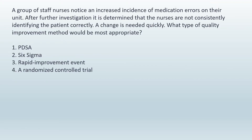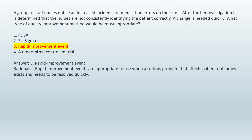A group of staff nurses notice an increased incidence of medication errors on the unit. After further investigation, it is determined that the nurses are not consistently identifying the patient correctly. A change is needed quickly. What type of quality improvement method would be most appropriate? 1. PDSA. 2. Six Sigma. 3. Rapid improvement event. 4. A randomized controlled trial. Answer: 3. Rapid improvement event. Rationale: Rapid improvement events are appropriate to use when a serious problem that affects patient outcomes exists and needs to be resolved quickly.